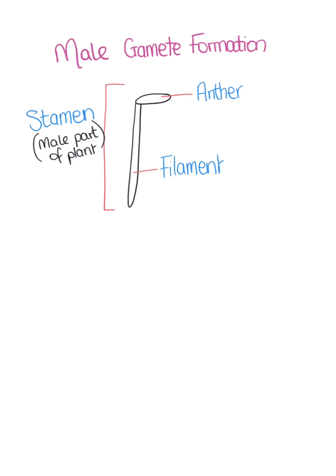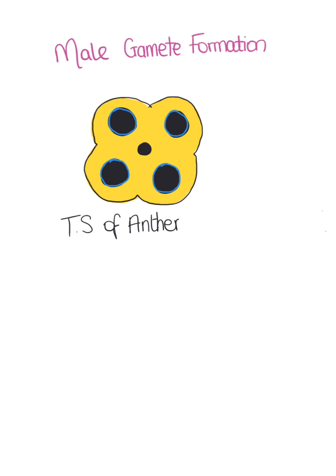Male gamete formation in plants takes place in the anther of the plant. This image here represents the transverse section of the anther. As you can see, it is made up of a vascular bundle and many pollen sacs.